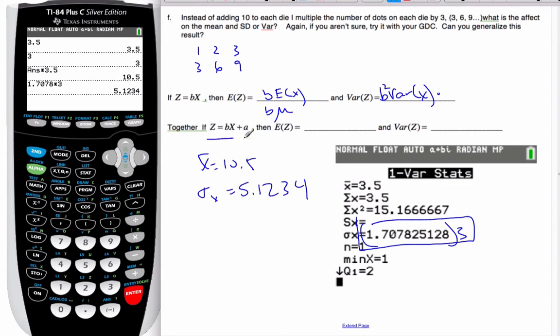Together if we have them all together, I'm going to have this adds values, this multiplies. So it's going to be B times the expectation of X plus A. The variance though is going to be just B squared times the variance of X. Do not add the A on the variance because the spread does not change.